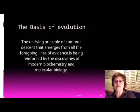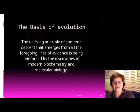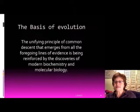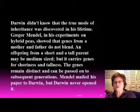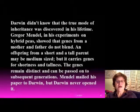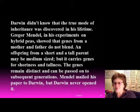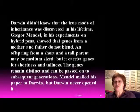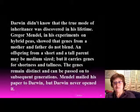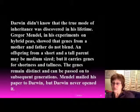This takes us to the basis of evolution — the unifying principle of common descent — which emerges from all these lines of evidence and is being reinforced by the discoveries of modern biochemistry and molecular biology. Interestingly, Darwin did the basic work on evolution but didn't know about genetics. Gregor Mendel, who figured out genes and their important role in evolution, actually sent his paper to Darwin, but Darwin had never opened it — he died without knowing about it.